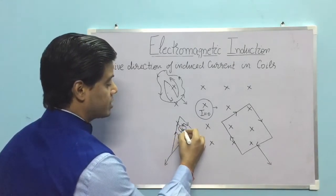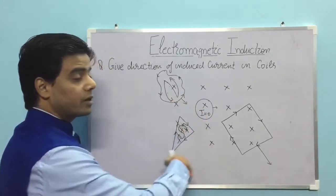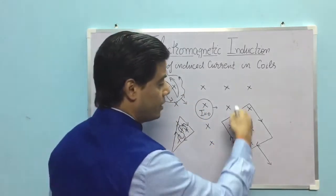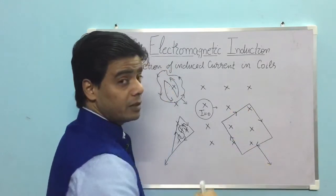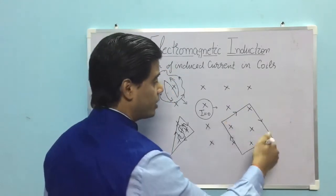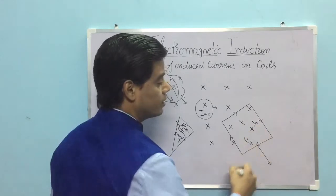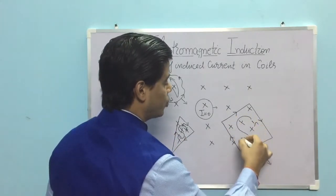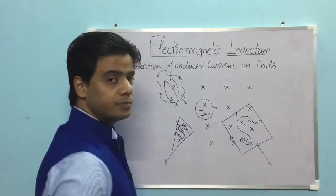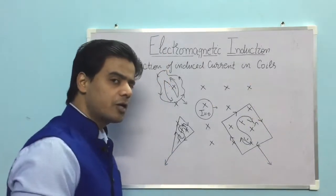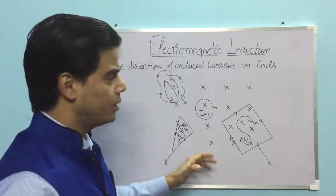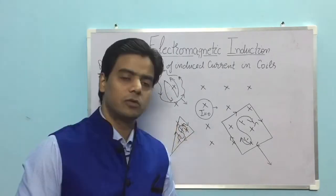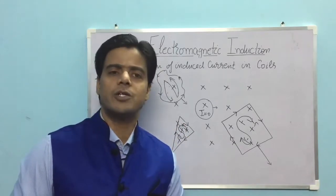For the third coil also moving out of the field, the cause is again a decrement in the crossed magnetic field. So the coil will try to increase it by inducing more crosses — away from the observer — which means south polarity, and south polarity means clockwise current. This is how we can determine the direction of induced current in any coil using both Fleming's right-hand rule and Lenz's rule.